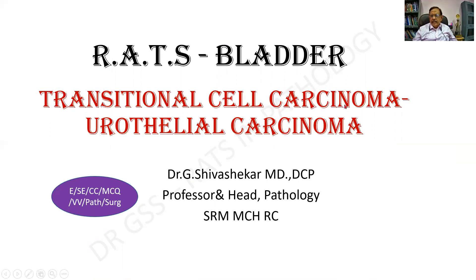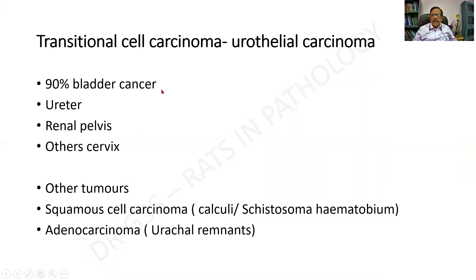Another question for the day is the transitional cell carcinoma, or urothelial carcinoma. This is usually asked as a short essay. 90% of cases occur in the bladder, but it can also be seen in the ureter, the renal pelvis, and the cervix. Other tumors that can occur in the bladder include squamous cell carcinoma and adenocarcinoma — so three tumors to remember: transitional cell carcinoma, squamous cell carcinoma, and adenocarcinoma.